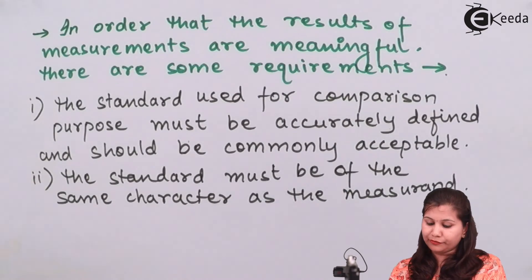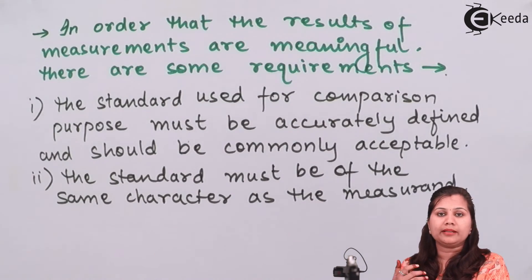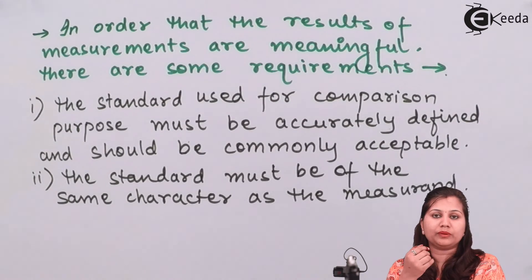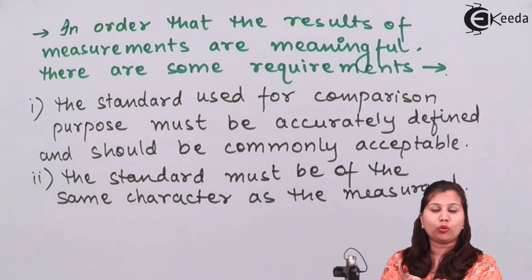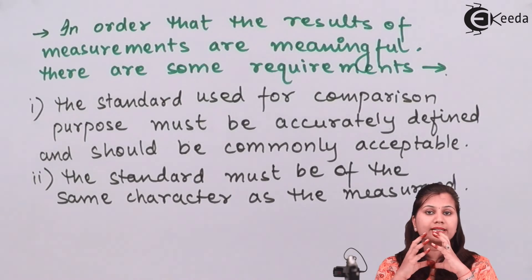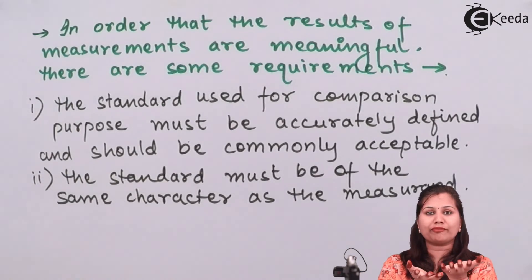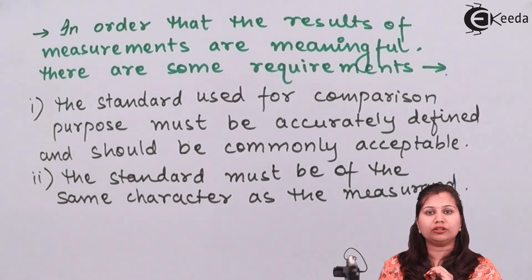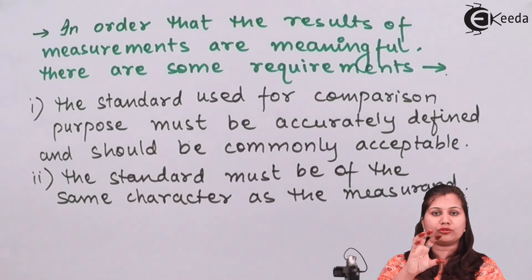The first requirement is that the standard used for comparison should be accurately known and commonly acceptable by all. For example, when measuring the weight of an unknown quantity by comparing it with a 1 kg standard, that standard must be exactly 1 kg. If it is 0.98 or 0.99 kg it cannot be used as a standard. So the standard must be accurate and acceptable to all persons performing the measurement.